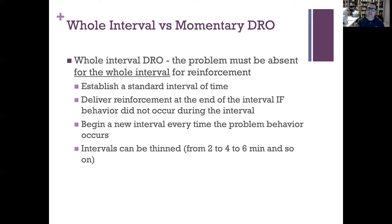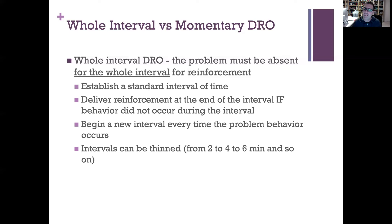The intervals can be thinned over time. Initially with Jacob, he gets the reinforcer every two minutes. As he consistently meets the requirement — not engaging in problem behavior for the full two minutes — maybe now he has to wait four minutes, then six minutes, and so on. You're gradually thinning the schedule until he can go through a whole class period without engaging in problem behavior.